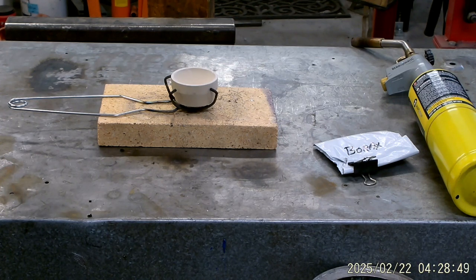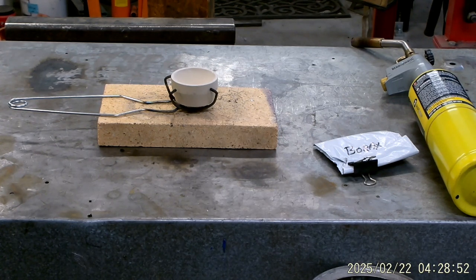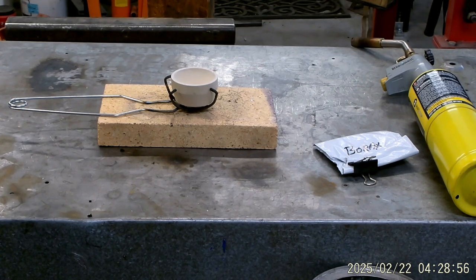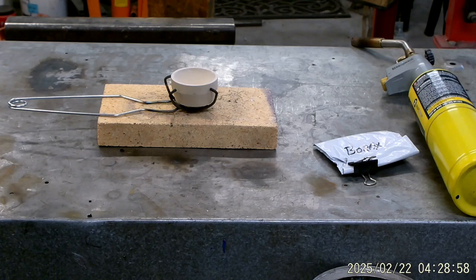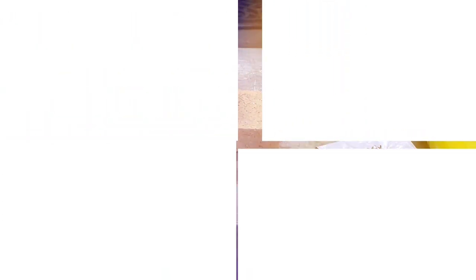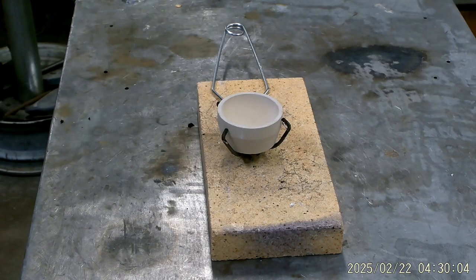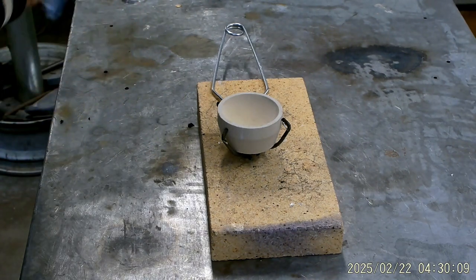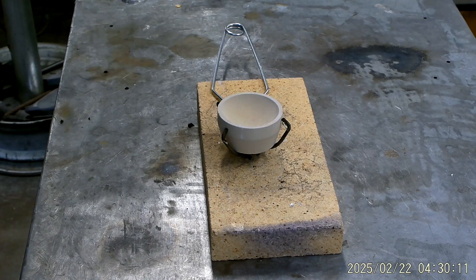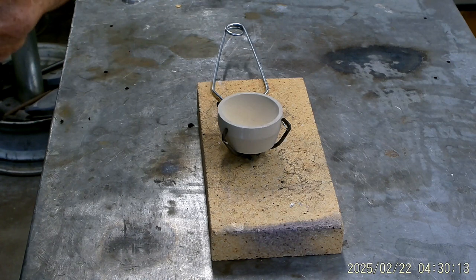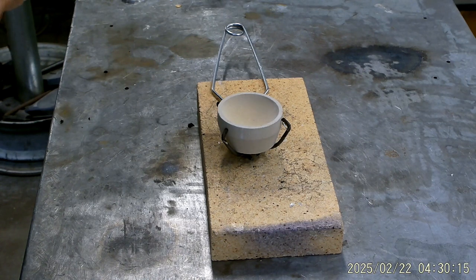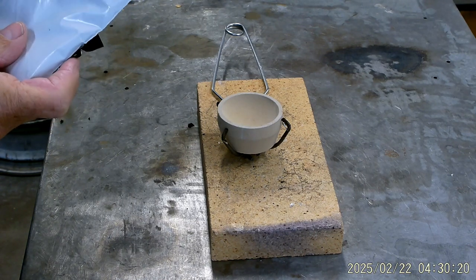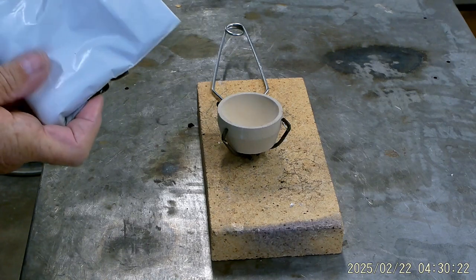So we're going to season this crucible. I'm sorry, cupel here in just a second and let me get set up and we'll get after. So here we are. You can see a little better. This is a little bag of borax. I've got more somewhere in a container. I figured I'd use this up before I do anything else. So we'll pour a little borax into this cupel.